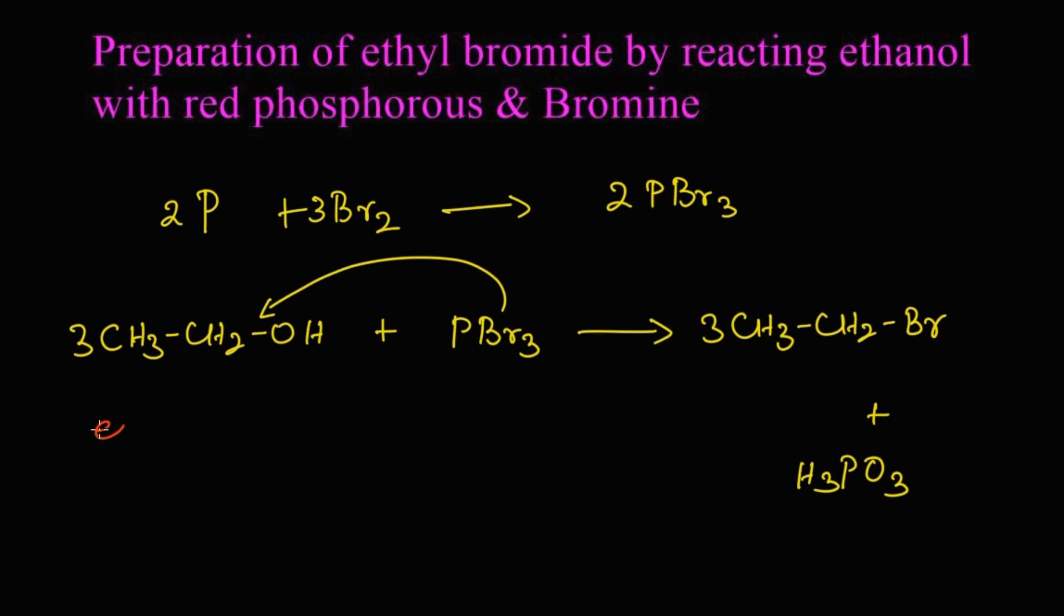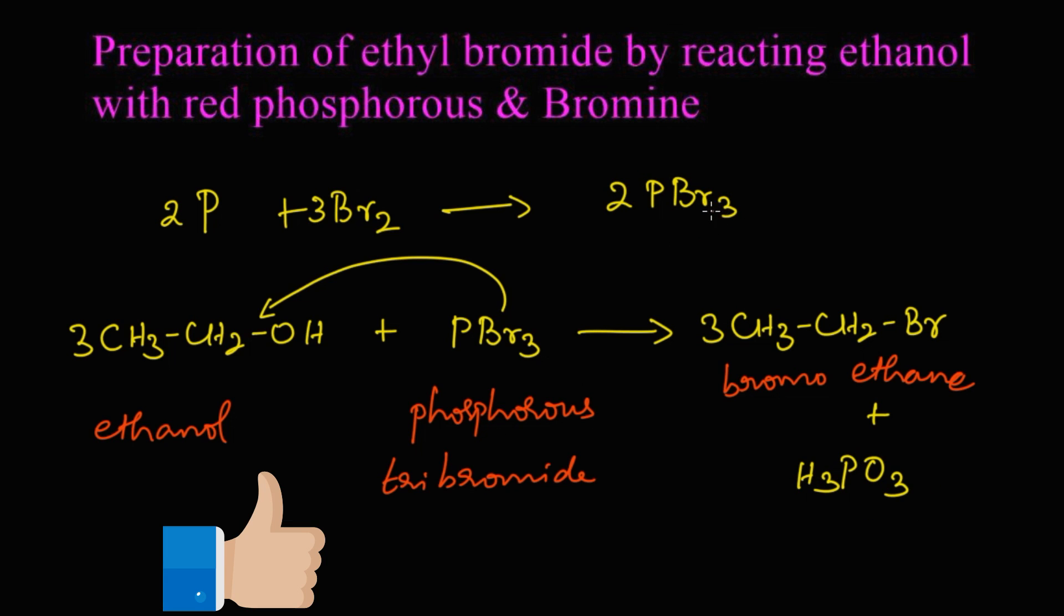Let's write the names for these structures. This is ethyl alcohol, or else ethanol, reacts with phosphorous tribromide and we get bromoethane along with phosphorous acid.